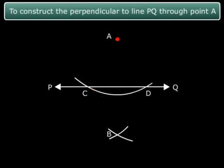What we now need to do is join AB and we have line AB that is perpendicular to PQ and passes through point A.